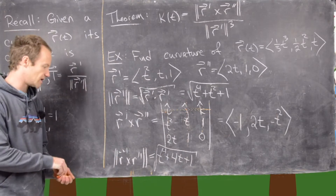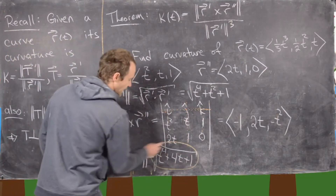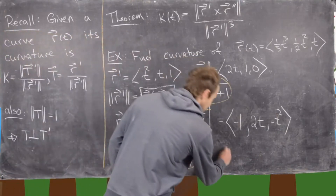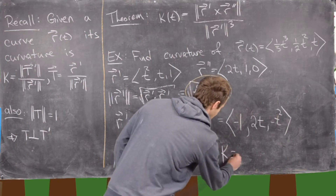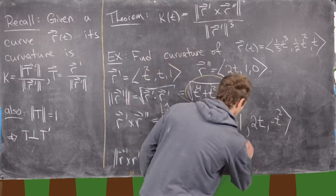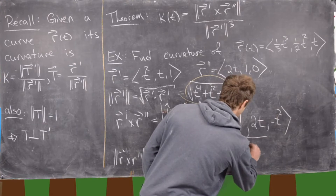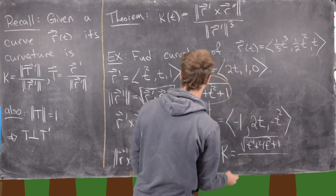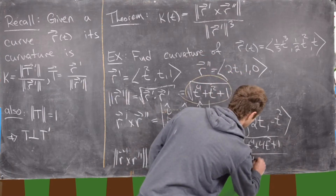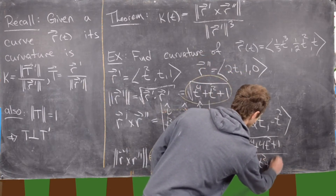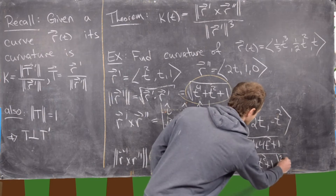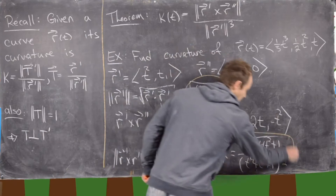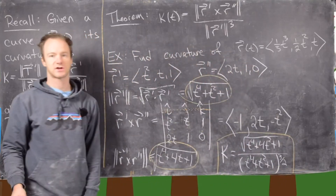Putting this all together, we divide the magnitude of r' × r'' by |r'|³. So kappa equals the square root of t⁴ + 4t² + 1 over (t⁴ + t² + 1) to the 3/2 power. That is the final answer for this curvature.